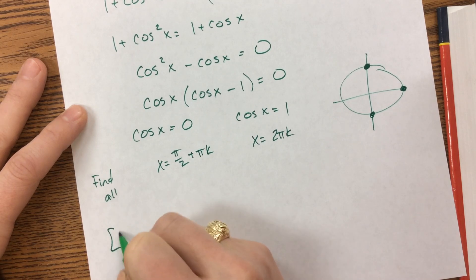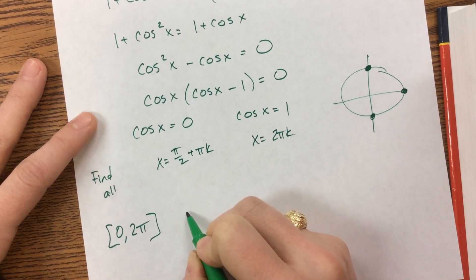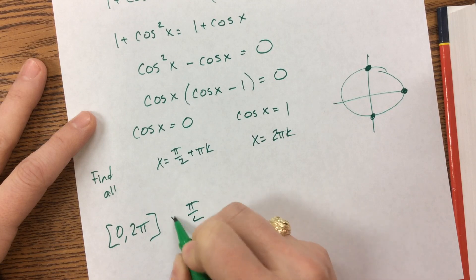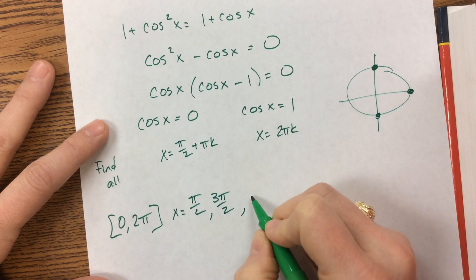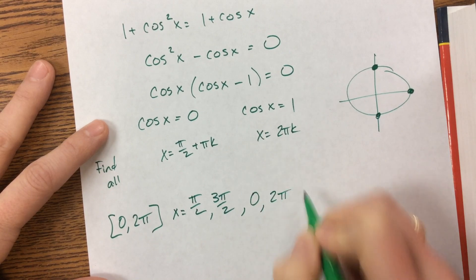If I said on the interval from 0 to 2π, we would say x equals π over 2 and 3π over 2, and 0 and 2π.